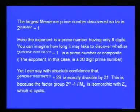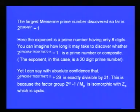This is because the factor group 2^(kp − 1) / mp is isomorphic with Z_p, which is cyclic. At the last conference, I gave an algorithm whereby we can find factors of very large numbers like this by applying my theorem pertaining to the previous paper — Euler's Generalization of Fermat's Theorem: A Further Generalization.